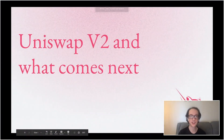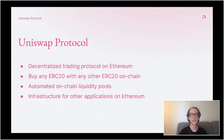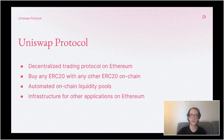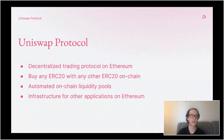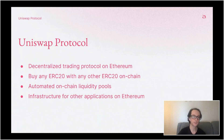Hi, my name is Hayden Adams and this talk is called Uniswap V2 and what comes next. The Uniswap protocol is a decentralized trading protocol on Ethereum. The idea is to be able to buy any ERC20 token with any other ERC20 token on Ethereum. It makes use of automated on-chain liquidity pools and is used as infrastructure for other applications on Ethereum.